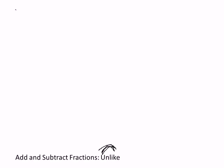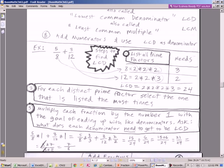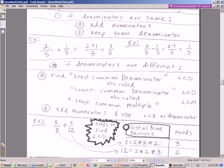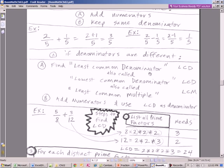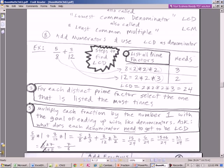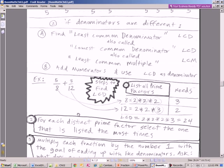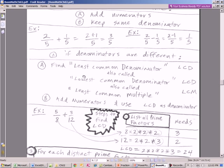Let's take this example — it's also in our PDF. We're going to start with 5 eighths and add 3 twelfths. This process is called least common denominator — also called lowest common denominator or least common multiple, LCM. There's an actual function in Excel that will calculate the least common multiple, which is the least common denominator for you.